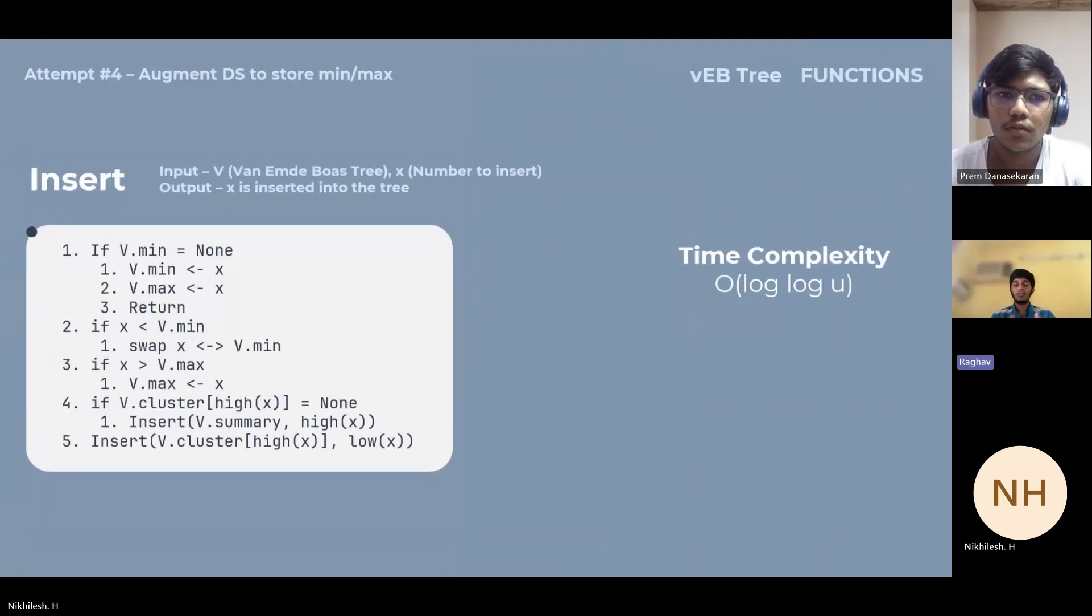Now the most optimized one. This is done by storing the minimum and maximum value for each cluster and for the summary as well. For insertion, first check if the tree is empty. If it is empty, store the min and max as the number you're going to insert. If it's less than the minimum, swap them. The reason for swapping is lazy propagation where you don't store the min recursively. If it's greater than the maximum, store the maximum value as the number.